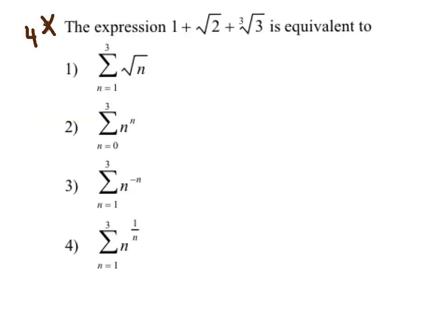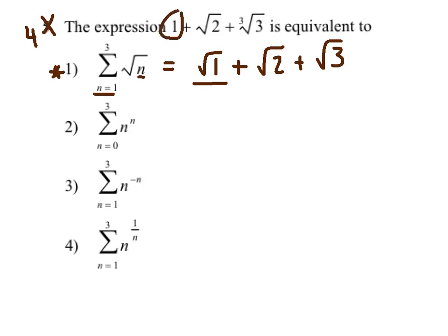Our fourth example is a little trickier — partly because they simplified the first term. Starting with number one, substituting n equals one gives radical one, then radical two, then radical three. This is tempting to call equivalent because radical one is really one, and radical two matches. But radical three is not the same thing as the cubed root of three. So number one is not equivalent — the third term screws it up.